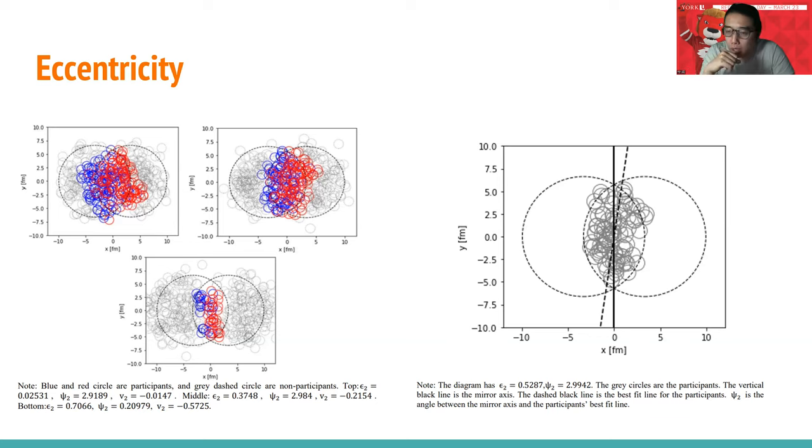In the other way, we can see what is phi 2. Phi 2 is the best-fit line angle between the best-fit line and the mirror axis. For example, if this is the mirror axis, this is the angle, this is the best-fit line. The angle between will be the phi 2, which is the angle here. This is the best-fit line, this is the mirror, so the angle here will be the phi 2.